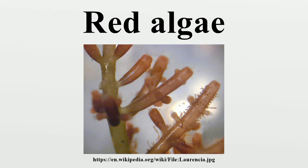Chloroplasts that lack external endoplasmic reticulum contain unstacked thylakoids and use phycobiliproteins as accessory pigments. They store floridean starch, a type of starch that consists of highly branched amylopectin without amylose,